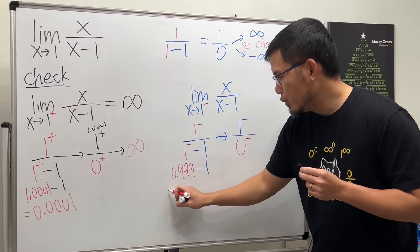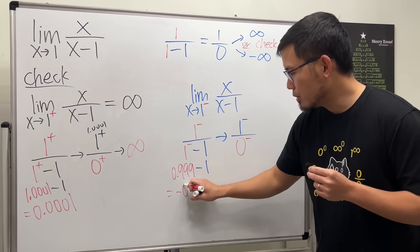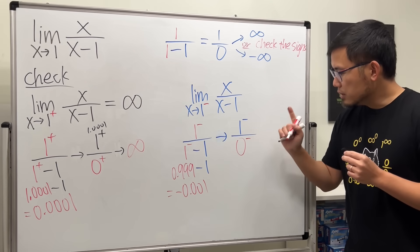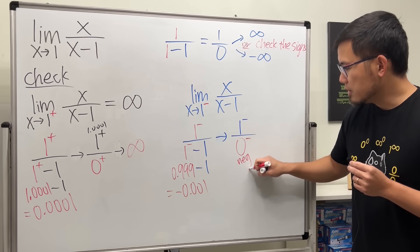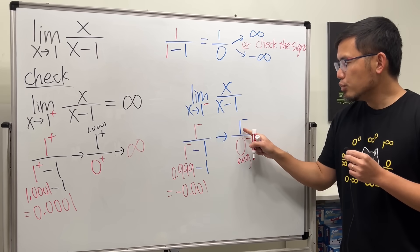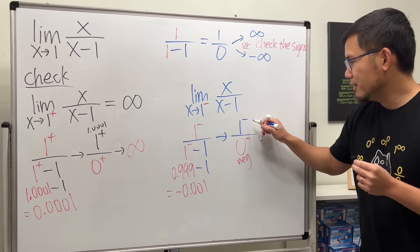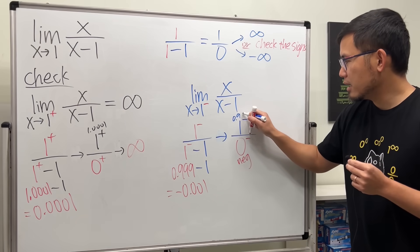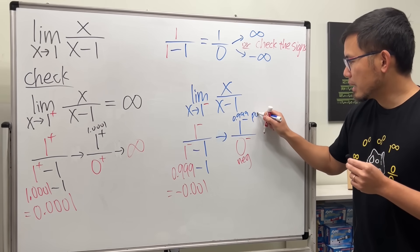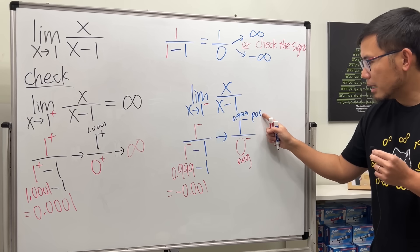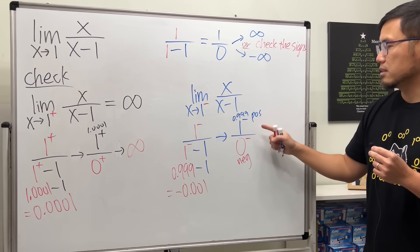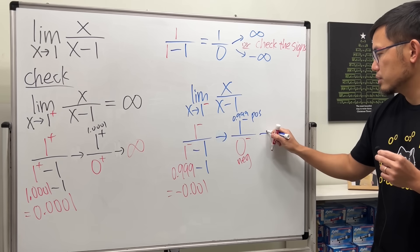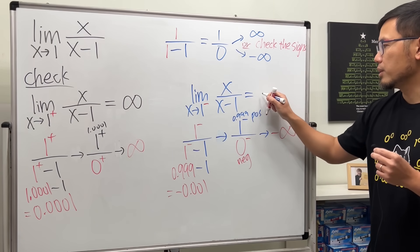You see, this time, we will end up with a negative number. Negative 0.001. And that's what this negative is for. So as you can see, the bottom here is negative. But the top, even though you have 1 minus, this is, in fact, still positive. Because this right here is like 0.999. So the top is still positive. Now, you have positive divided by negative. Again, check the signs. We get negative infinity. So this right here goes to negative infinity.